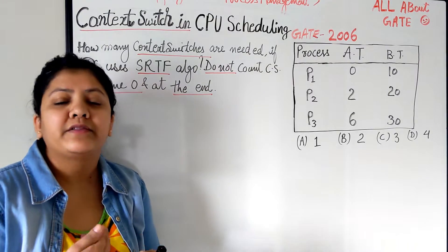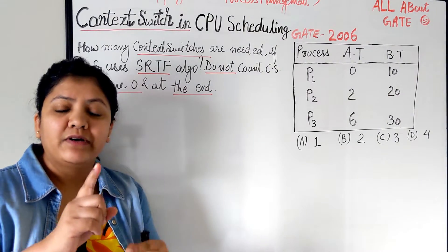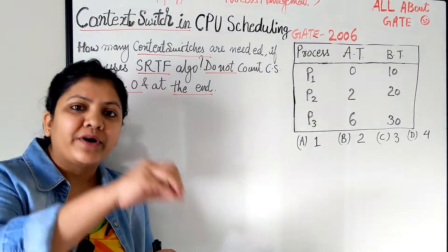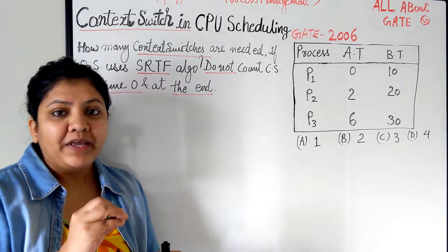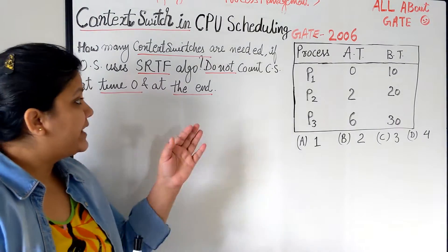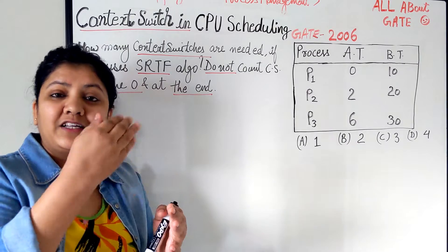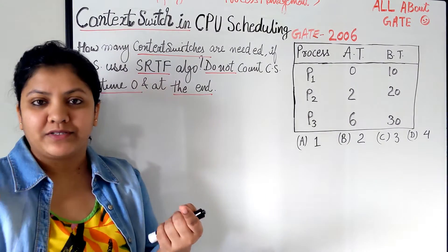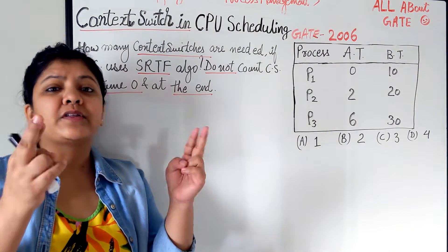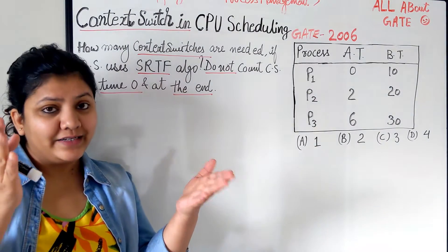Because we know when we begin CPU scheduling, we just have only one process to load in the CPU, in the running queue. And at the end also, when the last process terminates, there is saving of only one process. So the context switch does not take place at the beginning and at the end.